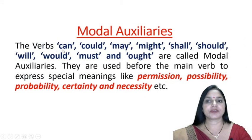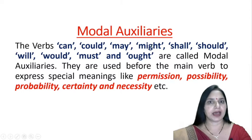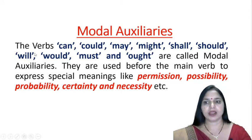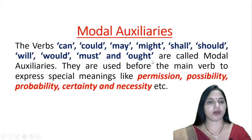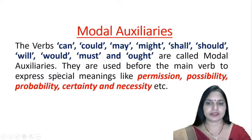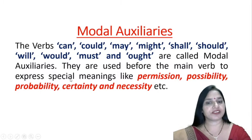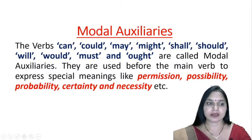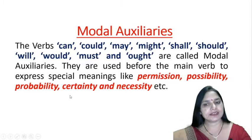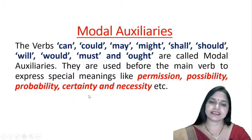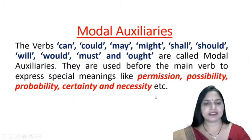The verbs can, could, may, might, shall, should, will, would, must and ought are called modal auxiliaries. They are used before the main verb to express special meanings like permission, possibility, probability, certainty and necessity.